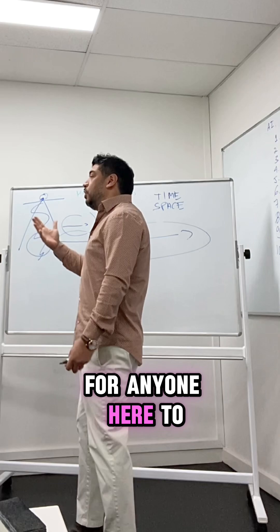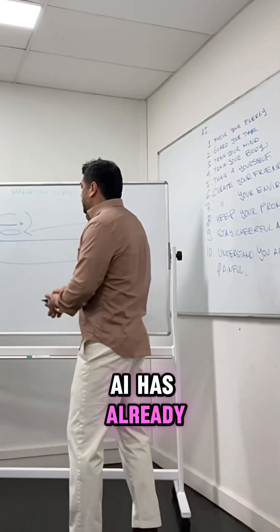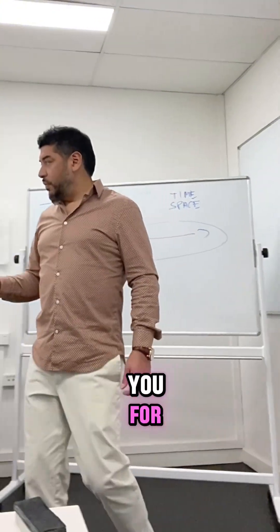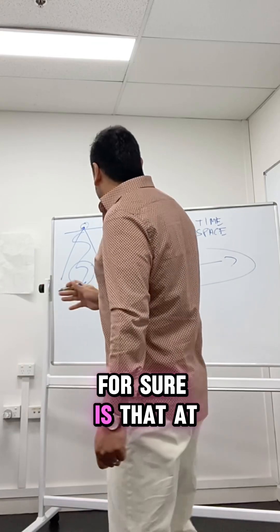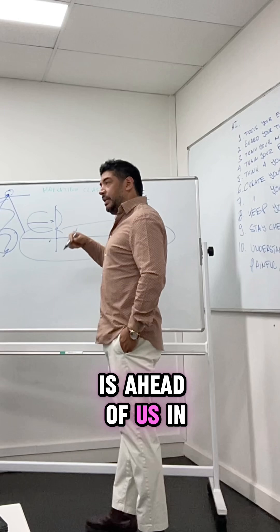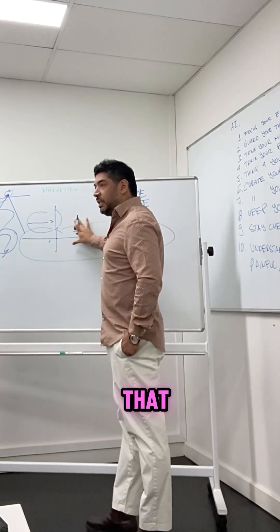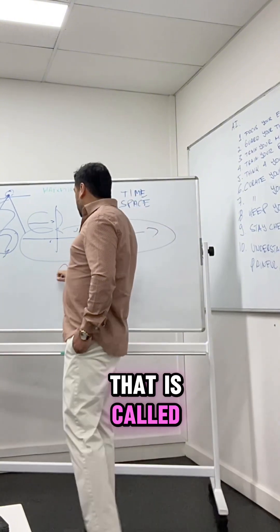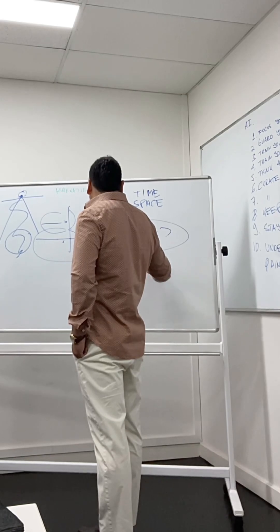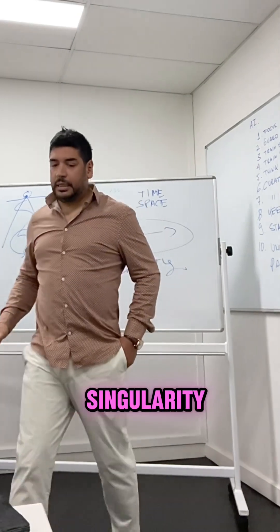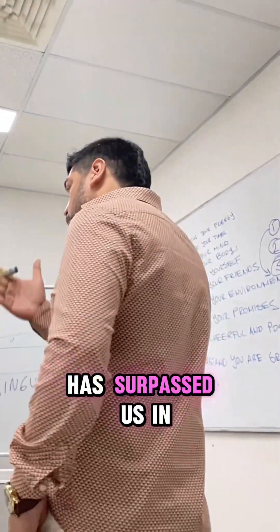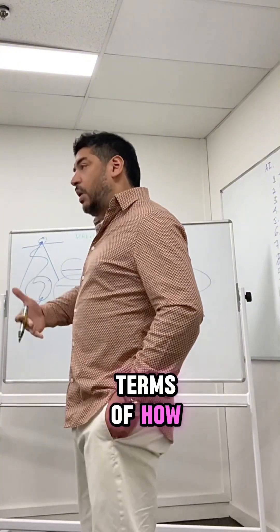But what I can tell you for sure is that at the very point in which AI is ahead of us in terms of learning, there is a name for that point and the name of that is called singularity. So what is the point of singularity? The point of singularity is the point in which AI has surpassed us in terms of how we learn.